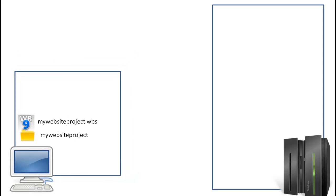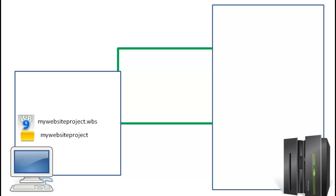Let's imagine that this box over here represents your web hosting account's server. A web server is the special computer that websites are stored on so they can be seen on the internet. To get the website from your computer up to the web server, the two have to connect. That connection is called an FTP connection — File Transfer Protocol — and it's something that your web hosting provider has sold to you. When you purchase web hosting service, that's what you're purchasing: a connection to a web server.